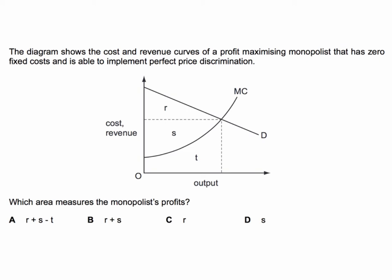Okay, not an easy question — not easy at all. Two things to think about here: no fixed costs and the firm can practice perfect price discrimination. The correct answer is R plus S minus T.